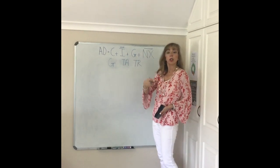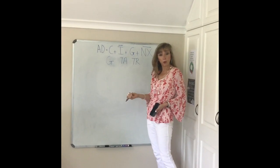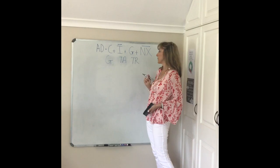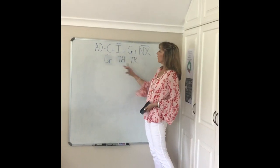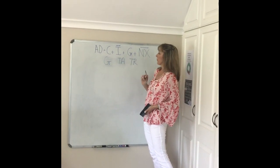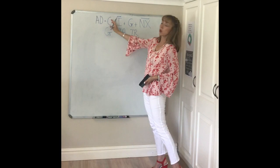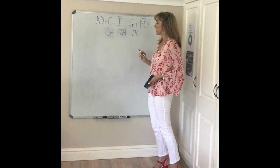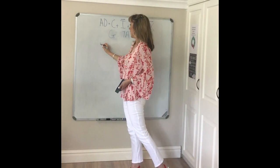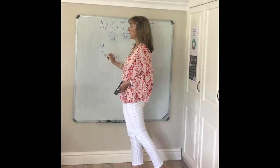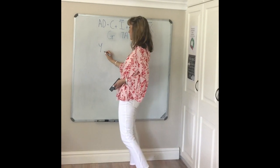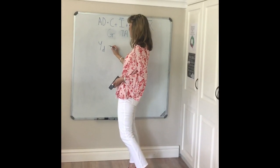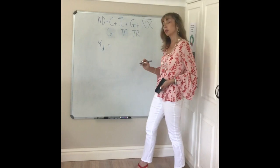Transfer payments are, for example, benefits that the government may give to the poor. So how does that affect aggregate demand? Will taxes and transfer payments affect consumption expenditure? We now have to consider income, but the difference here is we look at disposable income in the presence of government.